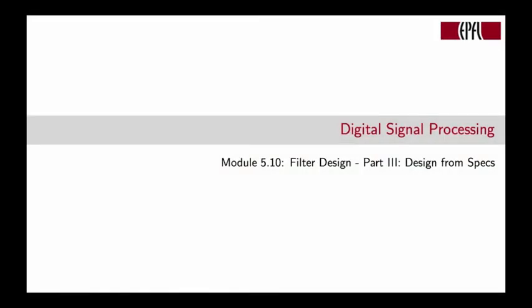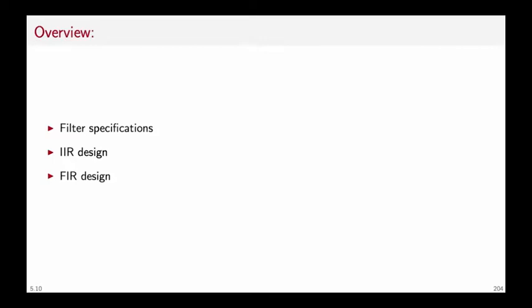Welcome to module 5.10 of Digital Signal Processing. This is the third and last part in our three-part series on filter design, and we will tackle the problem of designing a filter from a set of specifications. We will briefly describe some IIR and FIR filter design techniques. The purpose of this module is not to examine the details of each design technique, but just to inform you of what is available in the form of numeric packages that you can use to design your own filters.